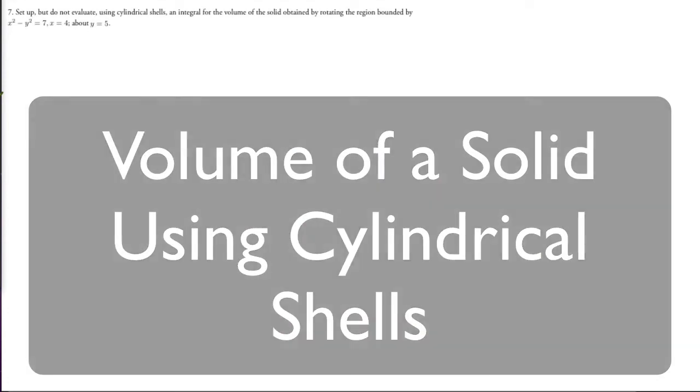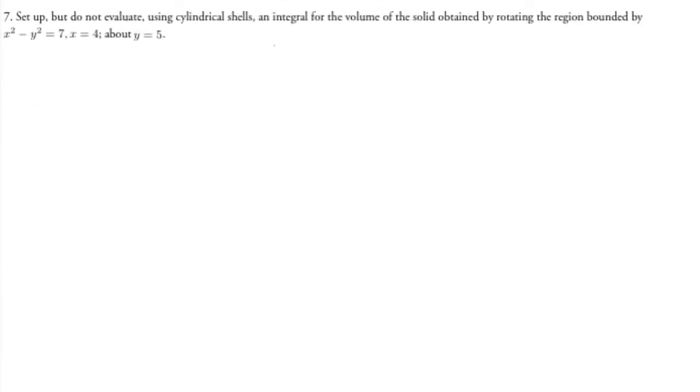Okay, so we're going to set up, but not evaluate, using cylindrical shells an integral for the volume of the solid obtained by rotating the region bounded by x squared minus y squared equals 7, x equals 4, and about y equals 5.